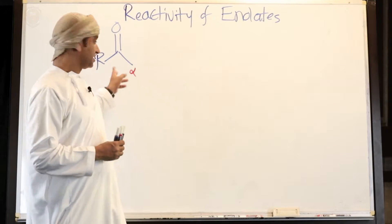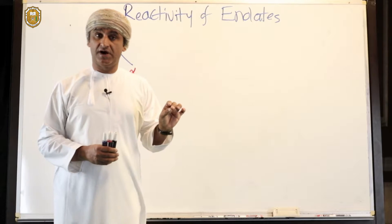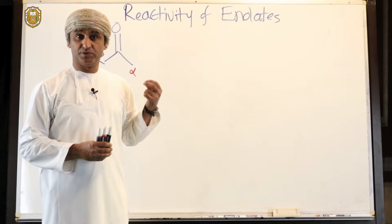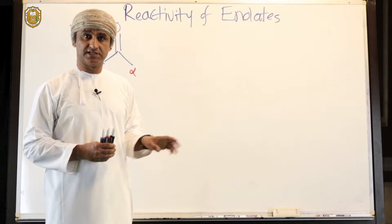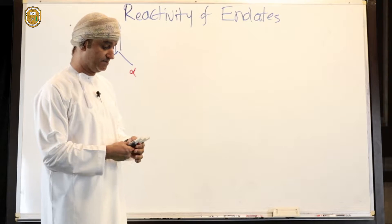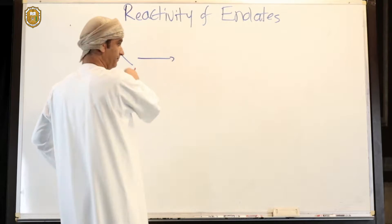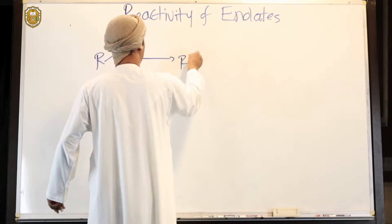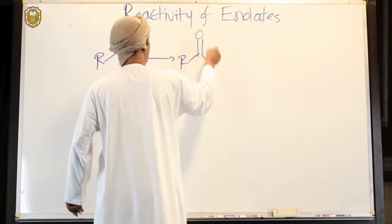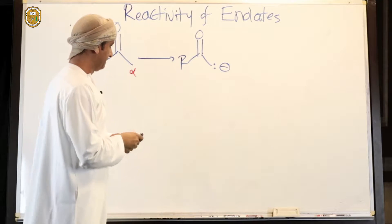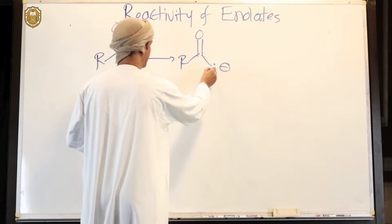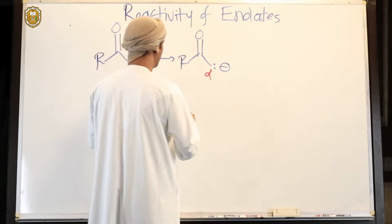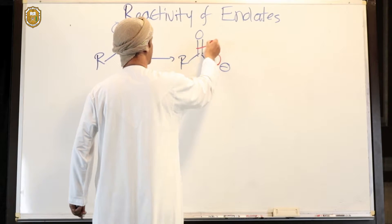Carbonyl compounds such as ketones with an alpha hydrogen are actually acidic at this position because the conjugate base, which is the alpha carbanion, is stabilized by resonance. Let's draw that reaction scheme again: if this ketone is deprotonated at the alpha position, an alpha carbanion is formed.